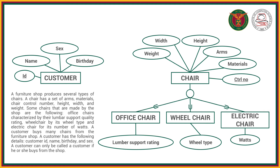Based on the problem and the concept of specialization and inheritance, we can put office chair, wheelchair, and electric chair as subclasses of entity chair. By putting these three entities as subclasses of chair, all of them will inherit the attributes and relationships of entity chair. So office chair, wheelchair, and electric chair will also have weight, width, height, arms, materials, and control number.